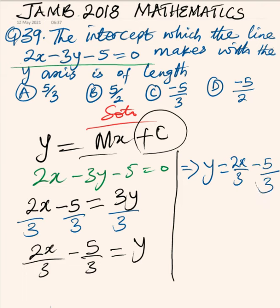Now by comparing it with what we have here, this is the intercept. So we can now say intercept c is equal to, because it's positive here and it's negative, where we have negative 5 over 3.